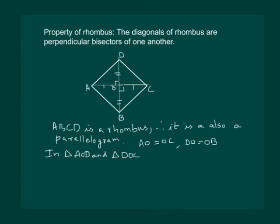Also in triangles AOD and COD, we have DO as the common side, so we have AO is equal to OC.